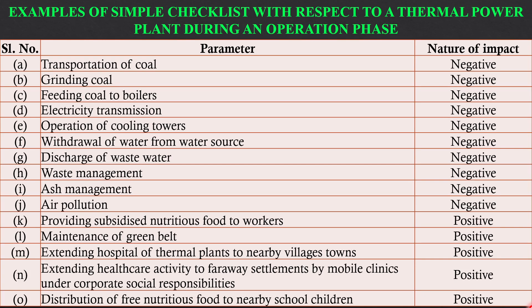This is an example of a simple checklist applied to a thermal power plant during the operational stage. Transportation of coal is a negative impact, discharge of water is a negative impact, and ash management and air pollution are always negative impacts. However, green belt development, extending hospitals to nearby villages, and providing food and nutrients to nearby schools are positive impacts.